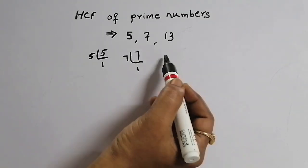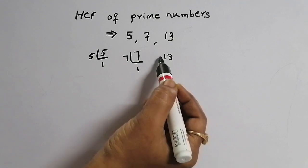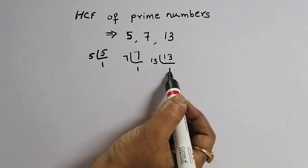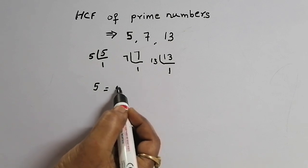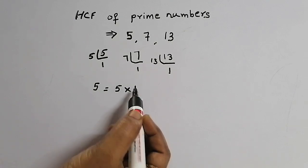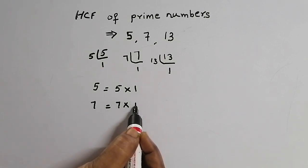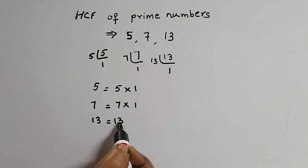Write the prime factorization for 5, 7, 13. 5 is equal to 5 into 1. 7 is equal to 7 into 1. 13 is equal to 13 into 1.